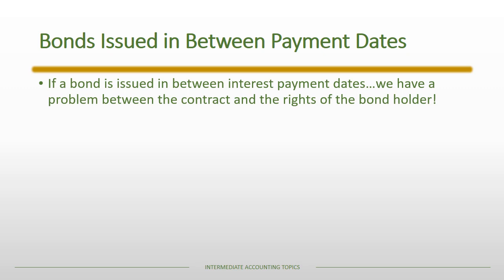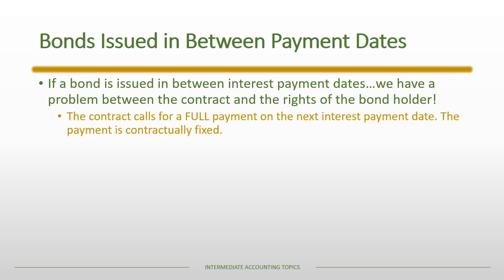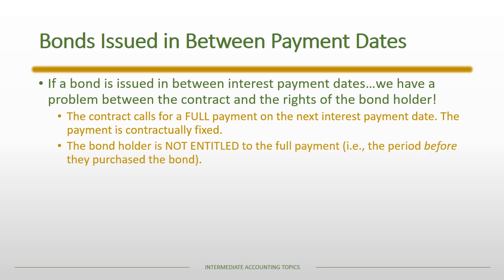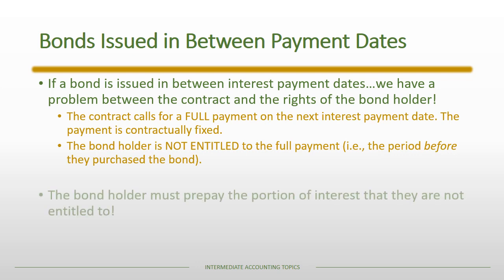The problem is that we have a contract and we have the rights of the bondholder and they don't quite match up. More specifically, the contract calls for a full payment on the next interest payment date — that payment is contractually fixed — however the bondholder is not entitled to the full payment. In other words, they're not entitled to any interest that accrued before they actually purchased the bond. So how do we handle this?